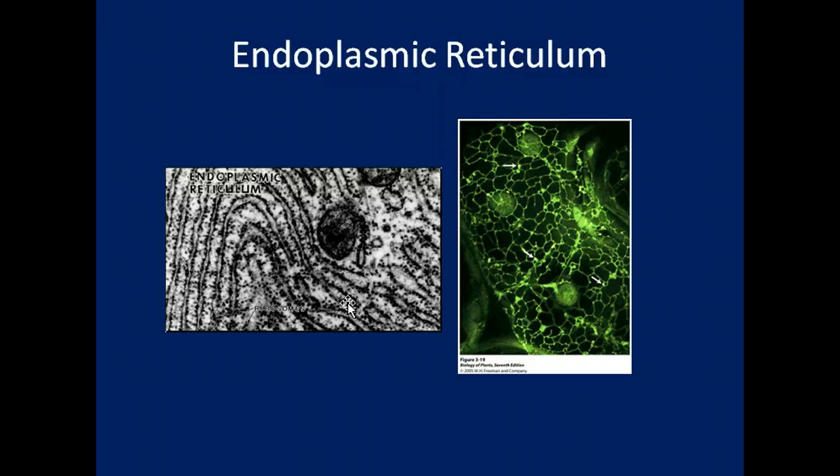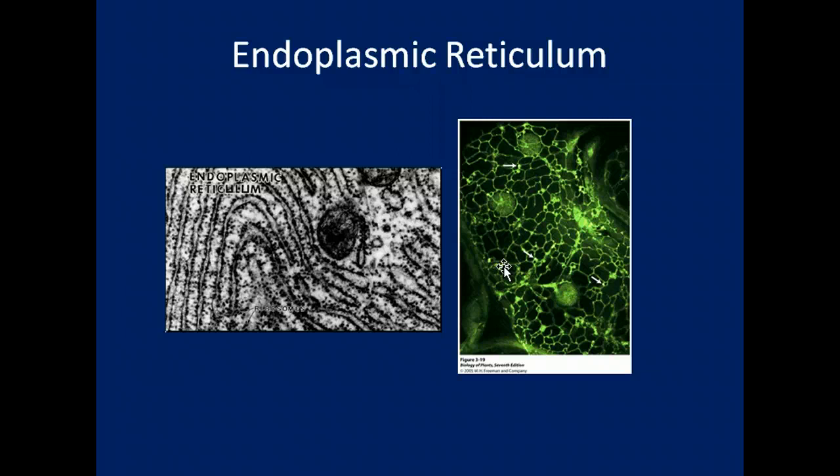Then you have the smooth endoplasmic reticulum, which has no ribosomes visible. What the smooth endoplasmic reticulum does is it starts packaging and then begins the transportation of proteins. The smooth endoplasmic reticulum also synthesizes lipids. So both types of ER are important for protein synthesis, but they have slightly different functions: rough ER has ribosomes and is responsible for protein synthesis; smooth ER packages those proteins, starts their transportation, and synthesizes lipids.